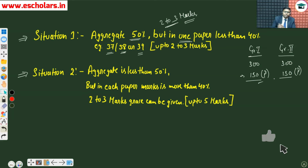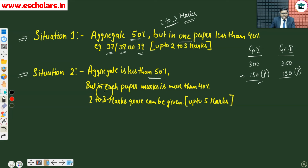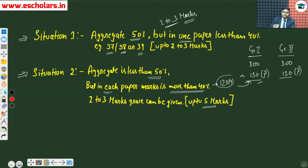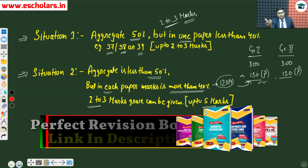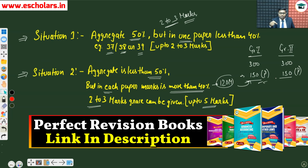What is the second situation? In the second situation, your aggregate is less than 50%. But in the remaining papers, you scored more than 40%. So suppose you passed in three papers — that gives 120 marks. The institute will not give you 30 grace marks here. There are no big grace marks — you can get a maximum of five grace marks. So with two or three grace marks, the institute can help you aggregate to 150, and you can clear your group — whether you are in Inter or Final.